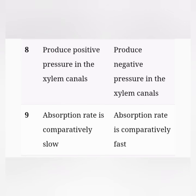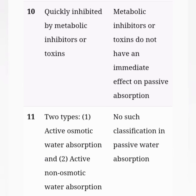Point number nine: in active absorption, the absorption rate is comparatively slow, while in passive absorption it is comparatively fast. Point number ten: active absorption can be quickly inhibited by metabolic inhibitors or toxins, but passive absorption cannot.